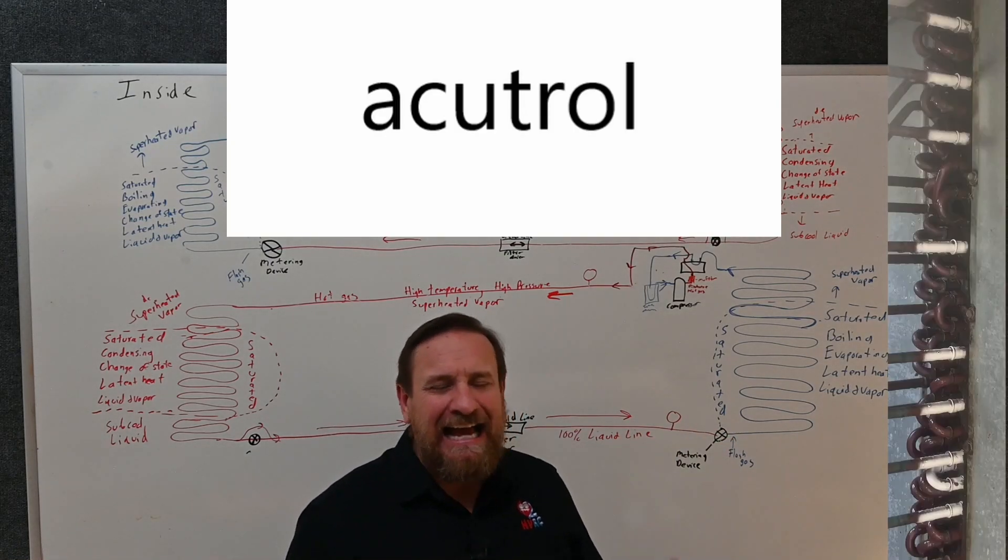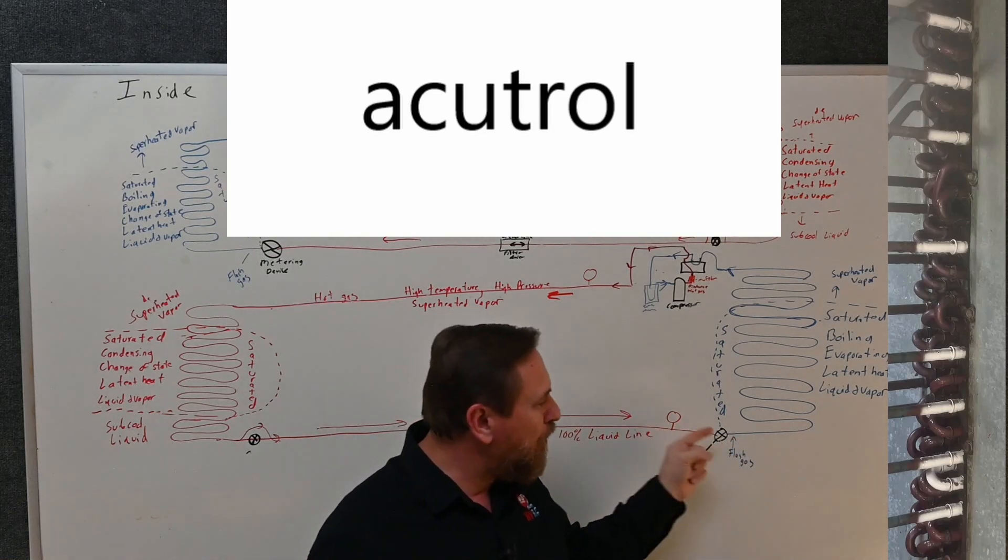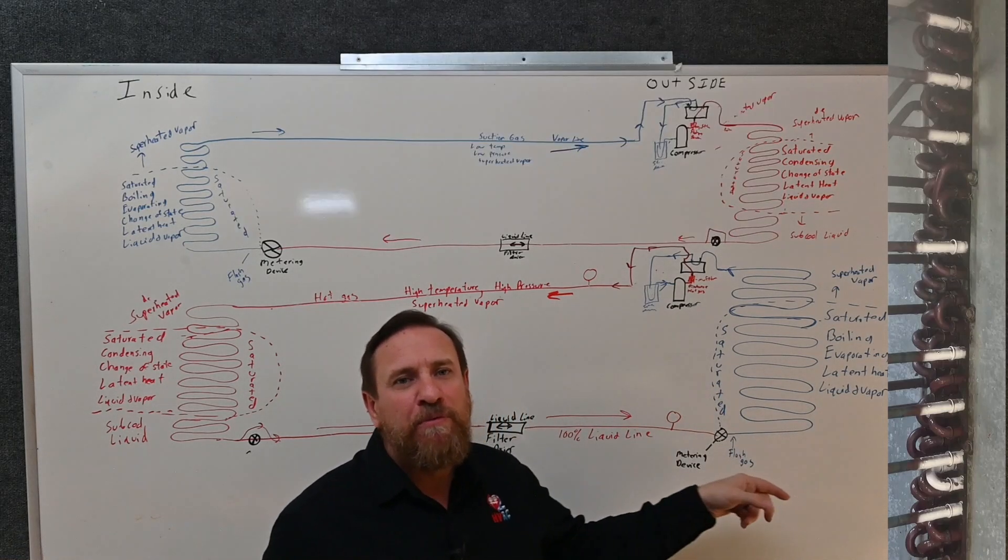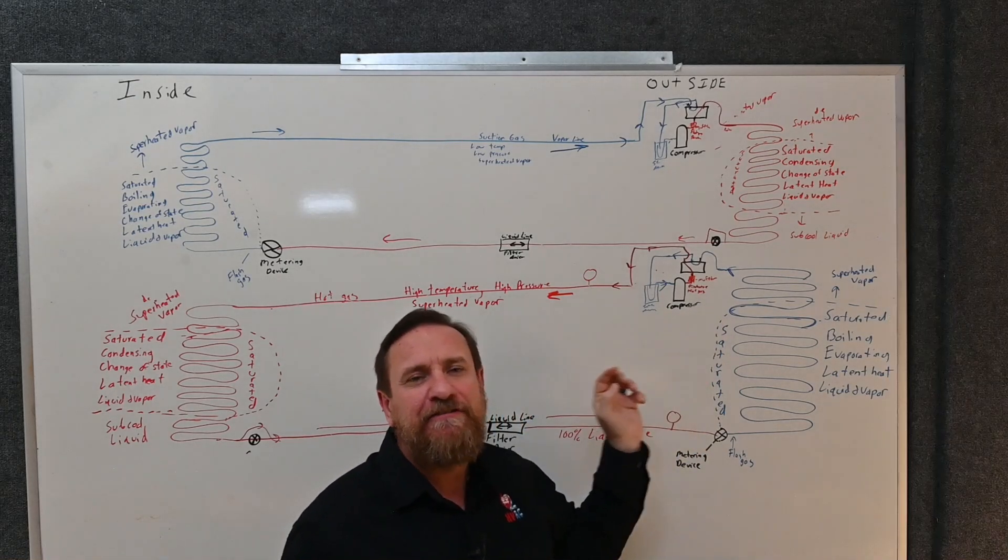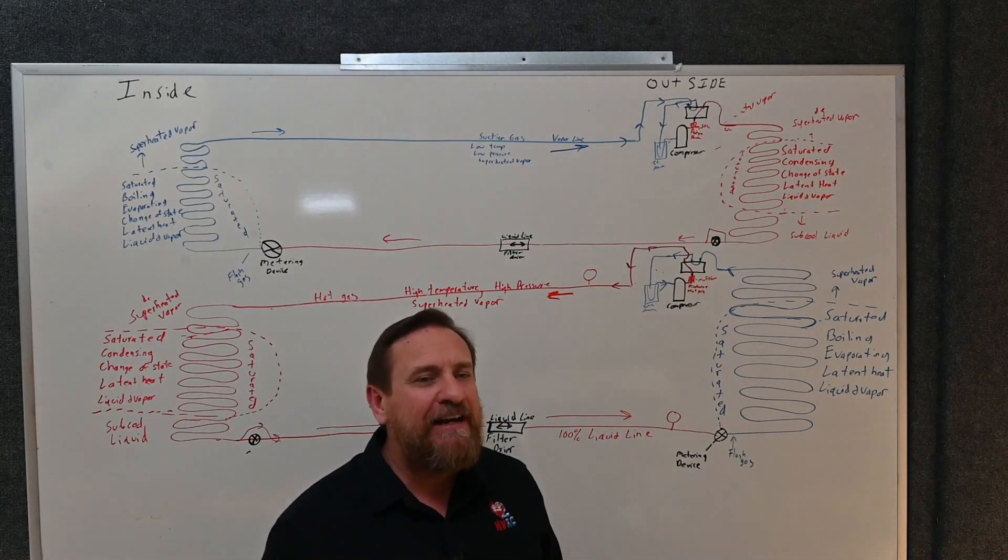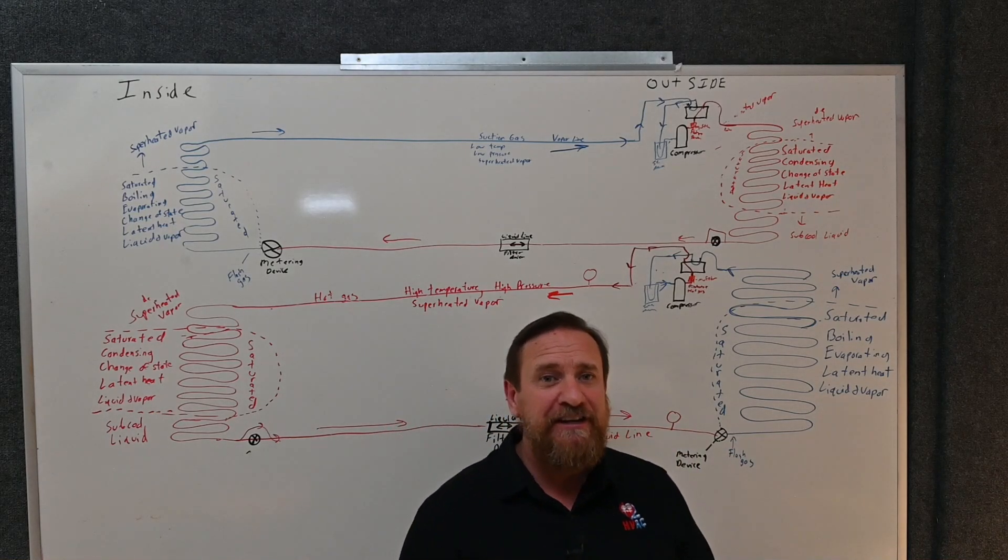Carrier likes to use these Accutrak—I can't remember the name of it—but there's like these little bitty meter devices for their package units. Instead of having one meter device feeding the outdoor coil, we'll have five or six or seven or eight or ten different little bitty meter devices feeding the outdoor coil. Those meter devices, especially the ones at the bottom, can get clogged up, and there's little tricks about how you can fix that, but it's another scenario.